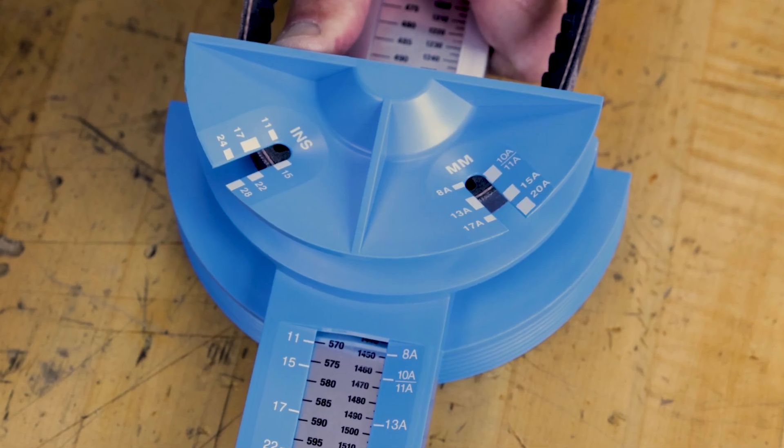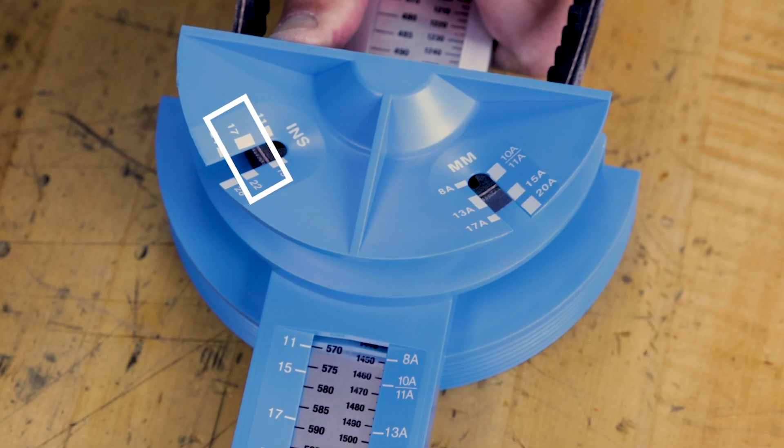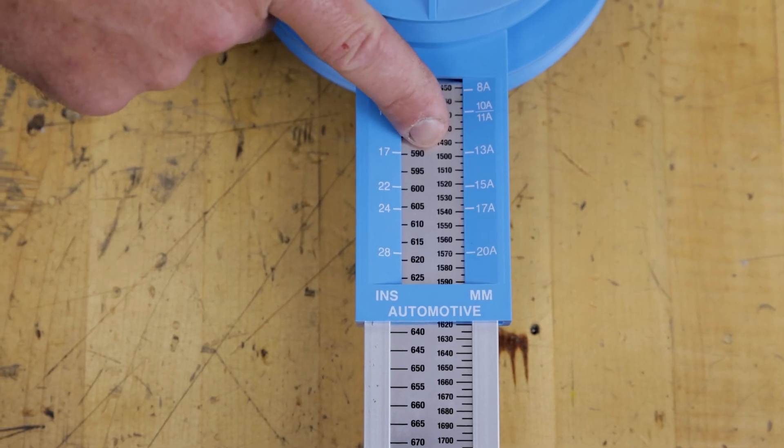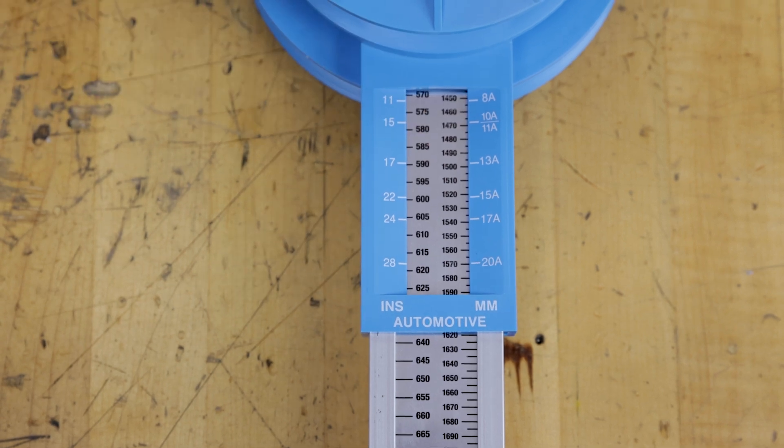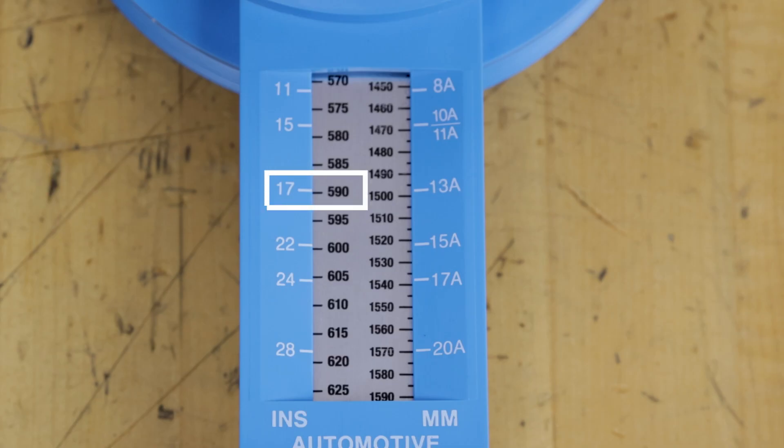As you can see, this particular belt falls within the 17 block on the inch side. The number next to the 17 in the measurement window is 590. This means that the belt is 59 inches.